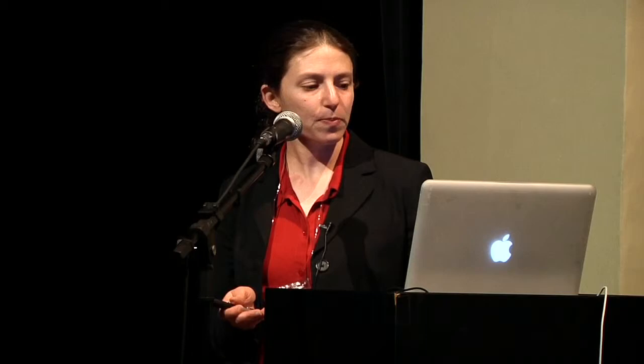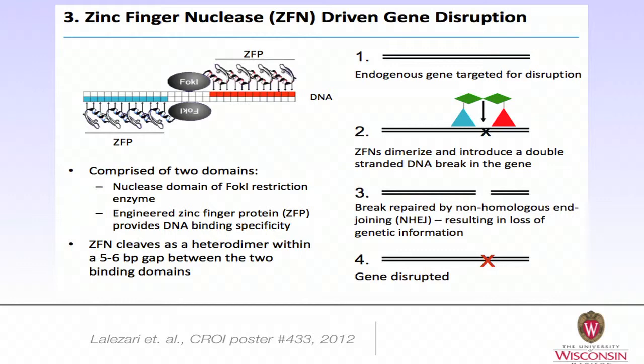I took this slide from a poster at CROI just last month describing how zinc finger nucleases work. These are comprised of two domains: a nuclease domain with a restriction enzyme — the FOK1 protein — and zinc finger proteins that can bind the DNA. A specific endogenous gene can be targeted for disruption, such that the zinc finger nucleases would dimerize and bind to the DNA, introduce a double-stranded break, resulting in a loss of genetic information, and this gene is disrupted.